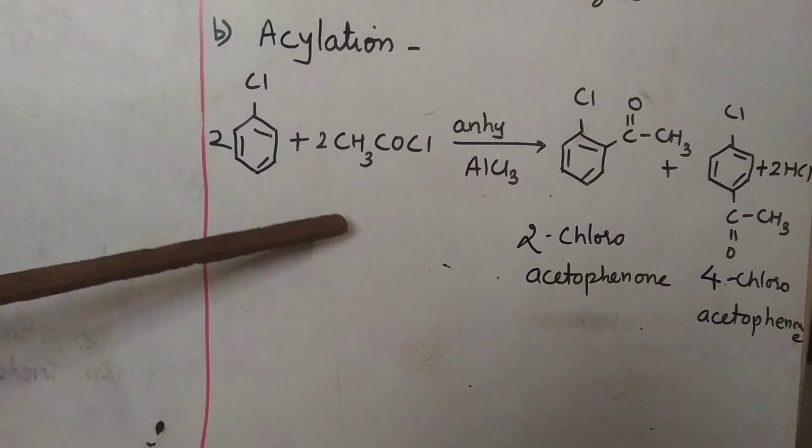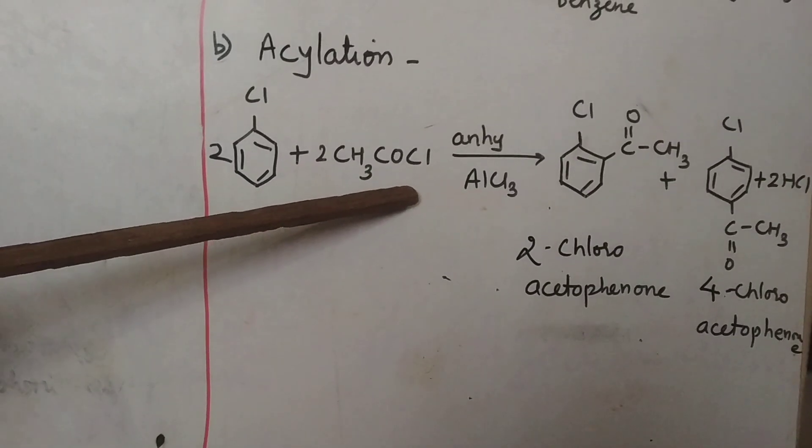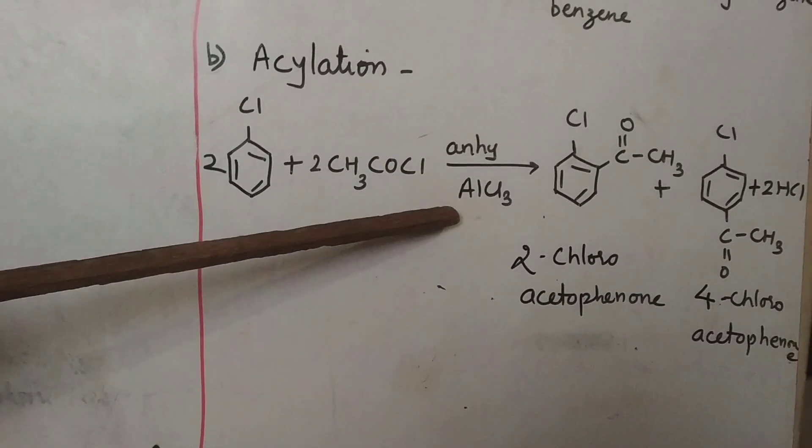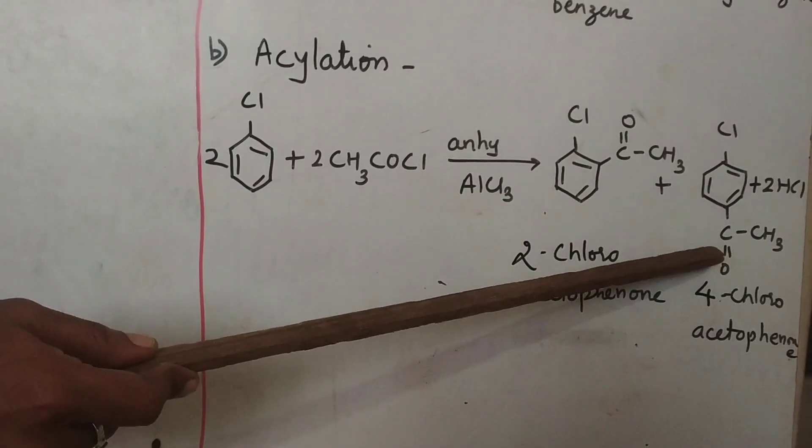The chlorobenzene when treated with acetyl chloride, this is acetyl chloride in presence of anhydrous AlCl3, shows substitution at ortho position and again para position.